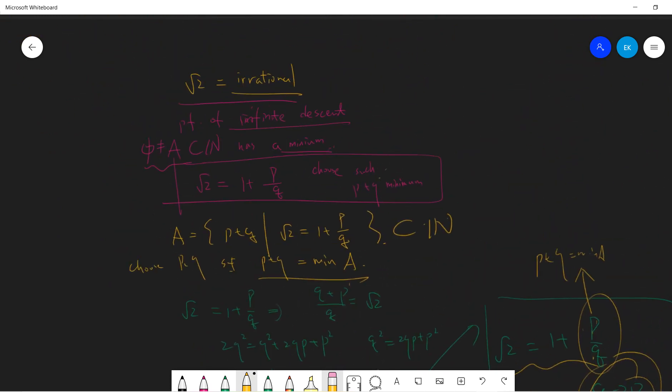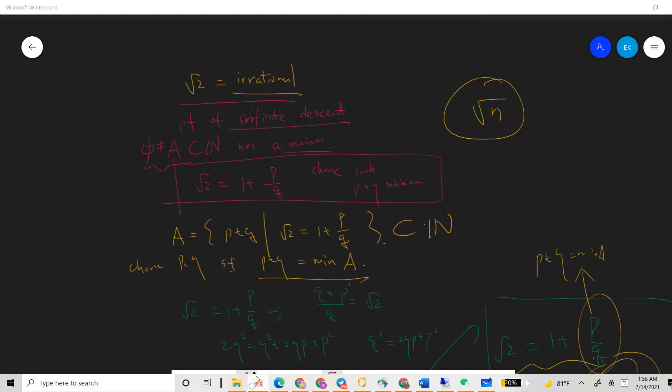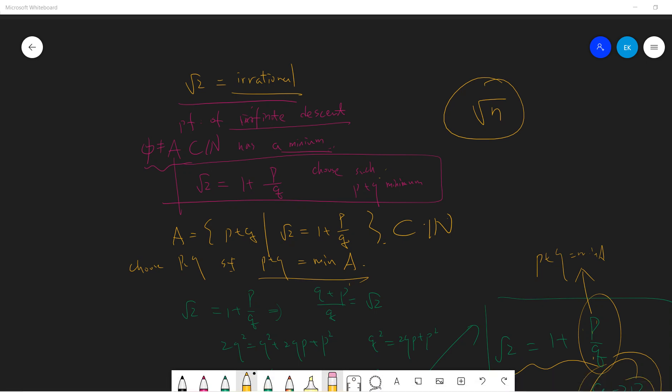And the next example we will talk about is the square root of n, and we will talk about some difficult results of the proof of infinite descent. So I will build a video list talking about the proof of infinite descent. Subscribe to my channel.